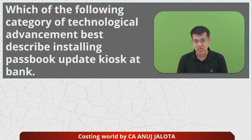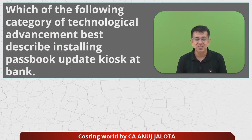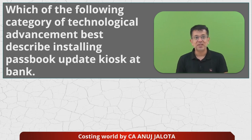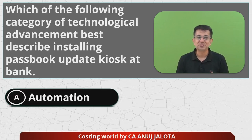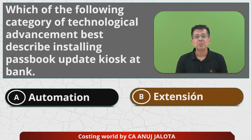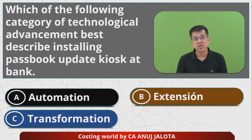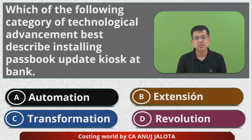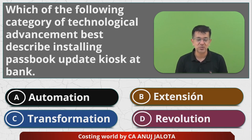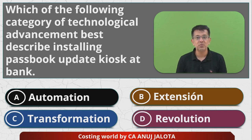I love this question because my dad was in banking. The options are: A is automation, B is extension, C is transformation, and D is revolution. Out of the four, whichever you think is the correct answer, try to put that in the comment below.